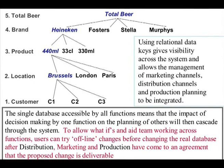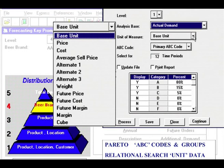Here we see the database: photo beer, beer brand, product, product location, product location customer. Next to it we see a screenshot of the dialog box for Pareto, otherwise known as ABC analysis. Data can also be interrogated on the basis of base unit, price, cost, average seller price, weight, future price, future cost, future margin, margin, and cube. So Pareto ABC codes and groups.